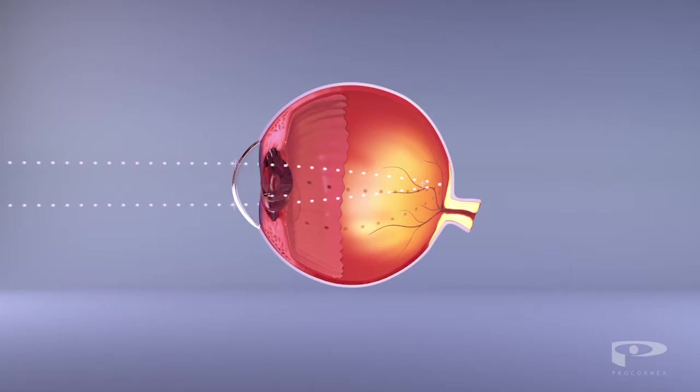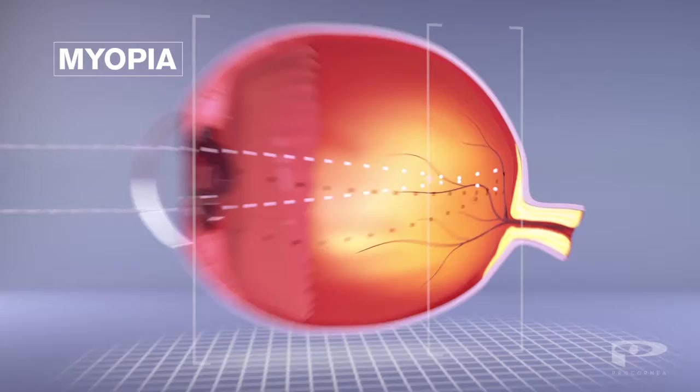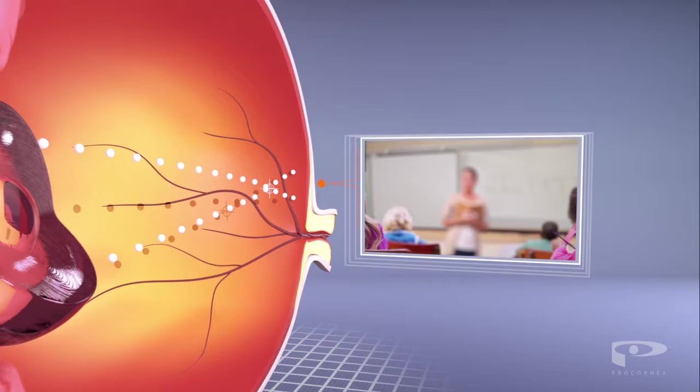In the case of myopia or nearsightedness, the eye grows too long. Light then focuses on the front of the retina, after which it disperses, causing distance vision to become blurred.